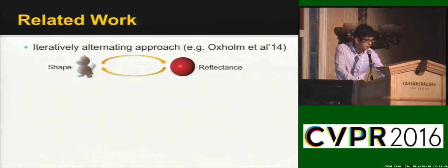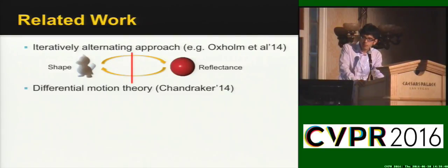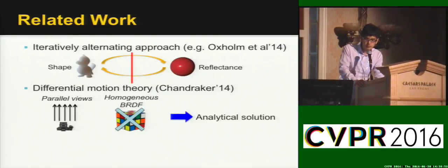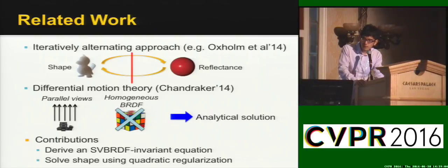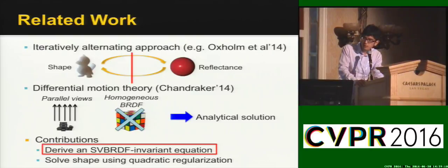To solve it, many previous works adopt an iterative approach which alternates between solving the shape and reflectance. Very few works can actually decouple these two and try to directly solve one of them. One work like this is the differential motion theory. However, it assumes all pixels in the image have parallel viewing directions and homogeneous BRDF of the object to obtain an analytical solution. Our contribution is that we do not make these assumptions and derive an SVBRDF invariant equation. Using this equation, we learn the shape using quadratic regularization.